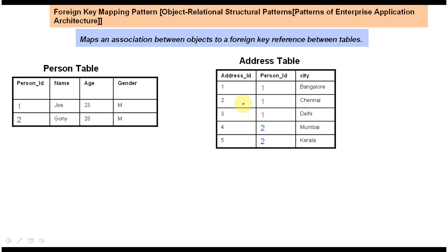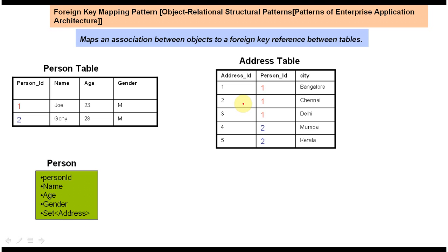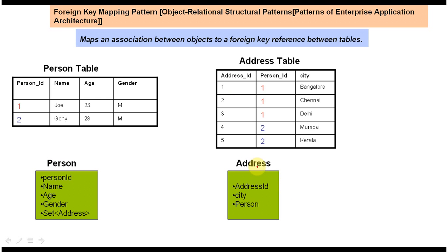So how can we represent this foreign key relationship in objects? For that we have to create classes for the person table and the address table — two classes: one is the person class and another is the address class. The person class will have person ID, name, age, and gender. The address class has address ID and city. To map the person object and address object, we put a set of addresses in the person object and a person object in the address object.